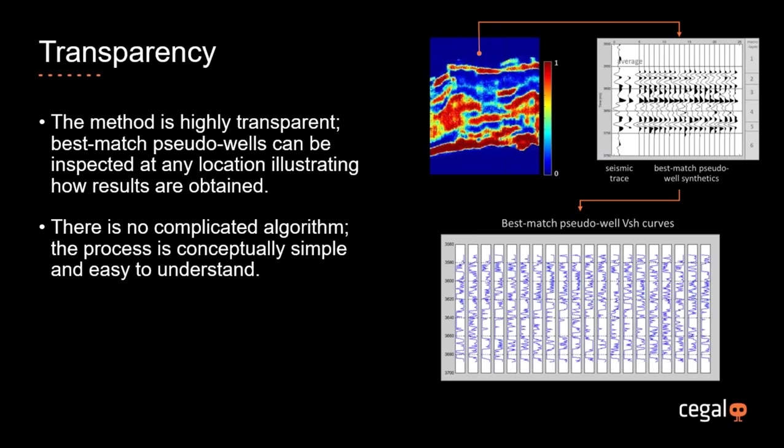Transparency is a key feature of the process. At any location, it's possible to output and inspect the best-matched pseudo wells that were averaged to produce the output. If you're interested in how a result was obtained, you can go back and output the best-matched pseudo wells at that location. If you don't like the result, you can adjust the parameterization of the pseudo wells. There is no complicated algorithm involved — there is clearly a lot of computation, but the overall process is conceptually simple: generate lots of pseudo wells, match them to the seismic, pick out the ones which match best, and average the properties to come up with an estimate.